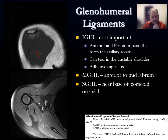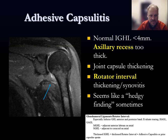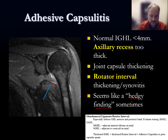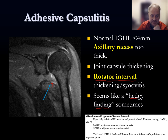Adhesive capsulitis: the inferior glenohumeral ligament normally looks like a thin, dark structure, but in adhesive capsulitis it appears thick and T2 hyperintense on coronal fat-saturated images. Additionally look at the rotator interval — if you see intermediate-density synovitis and thickening there, those are the two areas that support this diagnosis. Adhesive capsulitis is a clinical diagnosis, but the imaging findings of thickening and synovitis in the axillary recess and rotator interval support it.